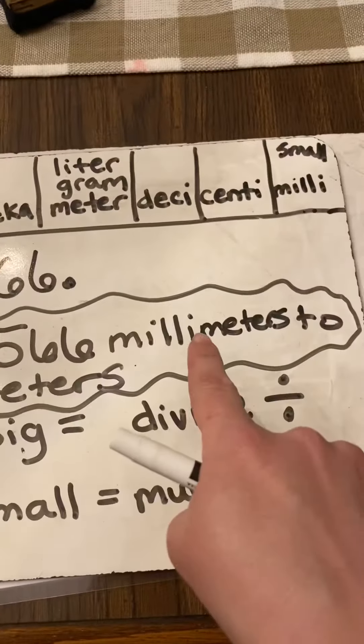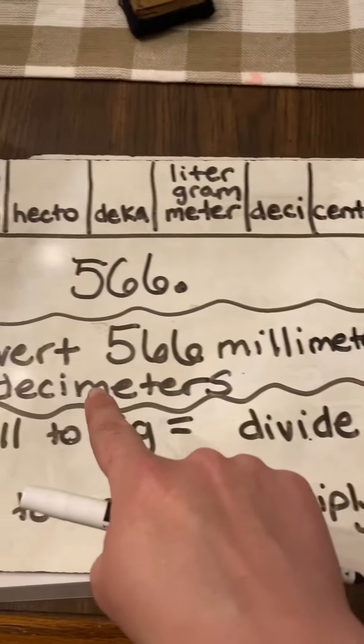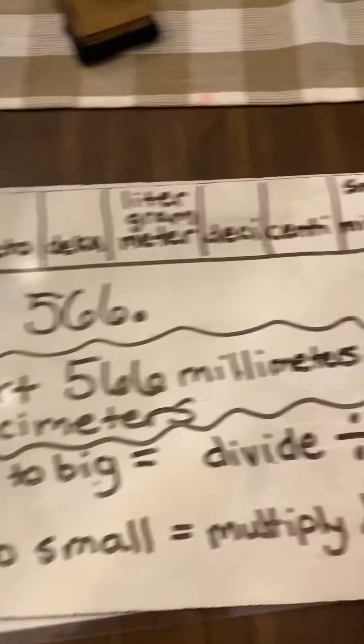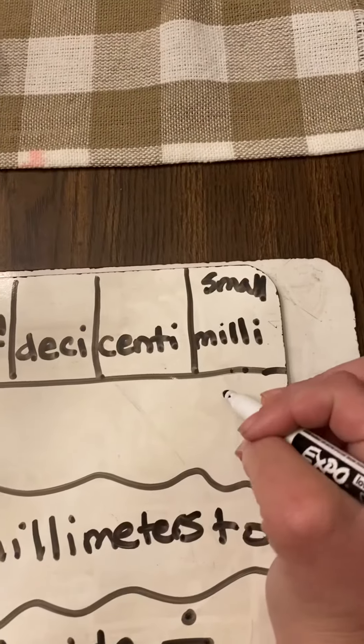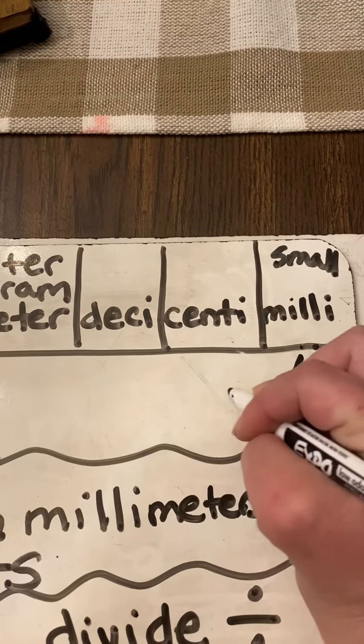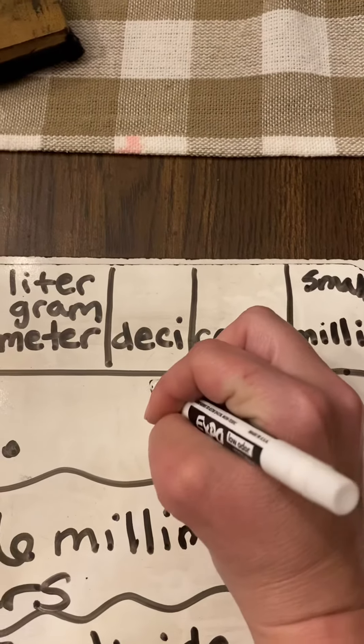We are moving from millimeters to decimeters. Millimeters to decimeters. Let's find it. Millimeters, and there is decimeters. Let's see how many times. 1, 2.